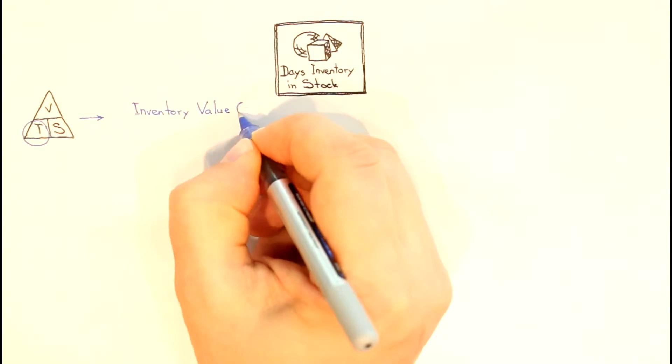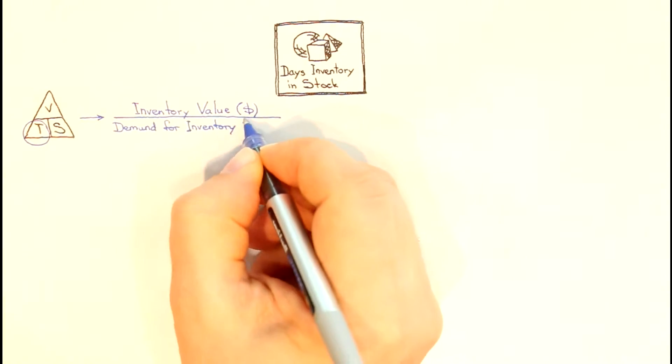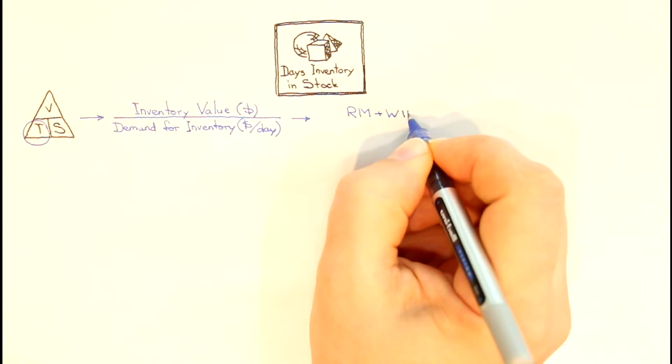For the numerator, we need to take the value of inventory in dollars that consists of raw materials, work-in-process, and finished goods.